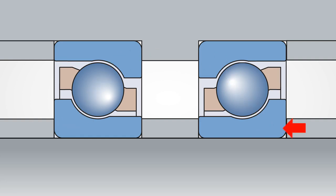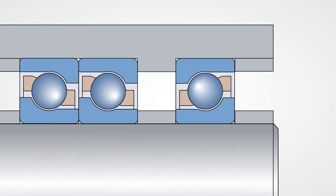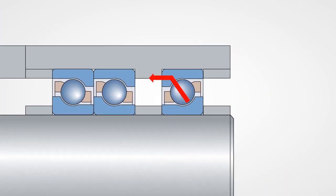In cases where the axial load in one direction is high, they can also be used in a tandem arrangement. Tandem arrangements still require an opposing matching bearing to locate and support the shaft.